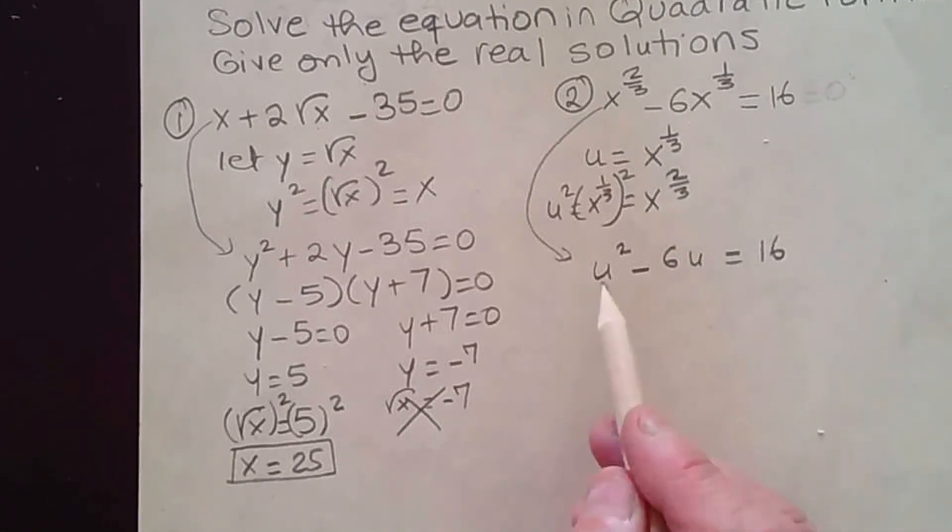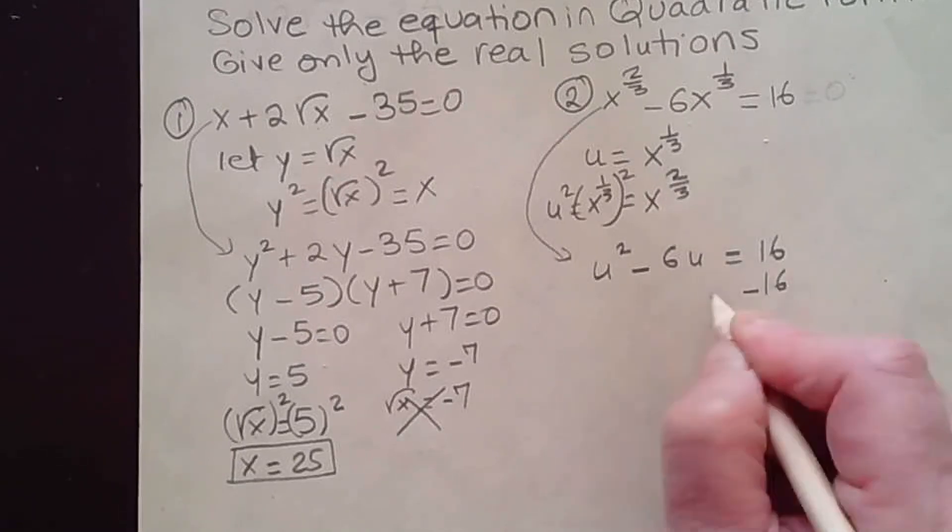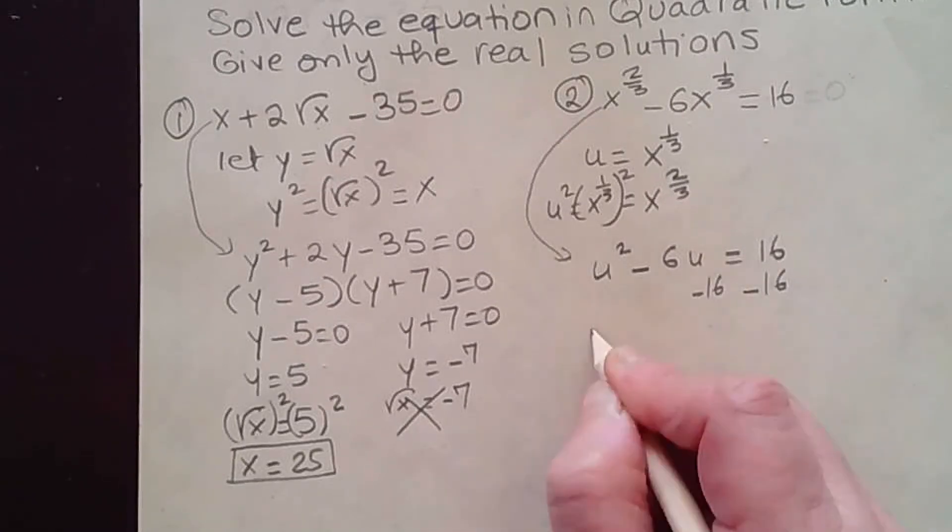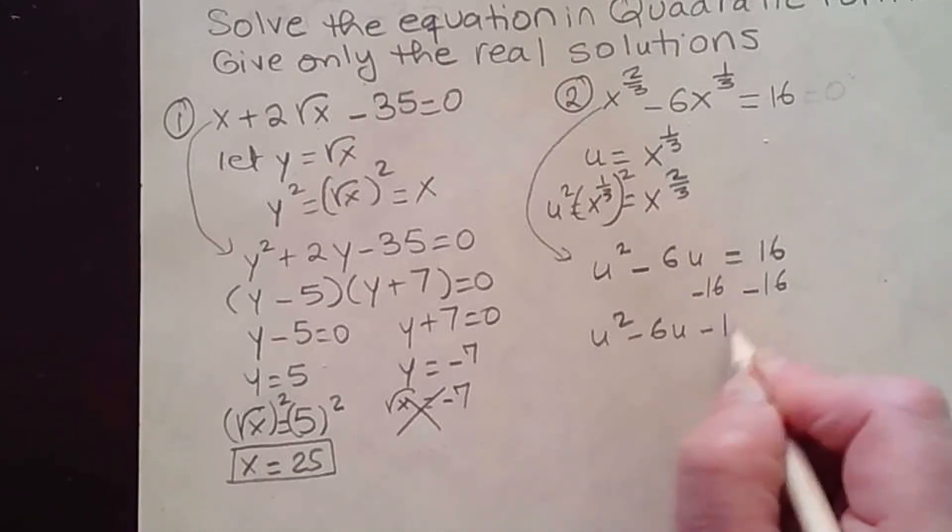Now if you notice, this is a quadratic equation in u. But first, before I can solve, I need to take this to the left side. One side has to be 0. So we subtract 16 on both sides. We get u squared minus 6u minus 16 equal to 0.